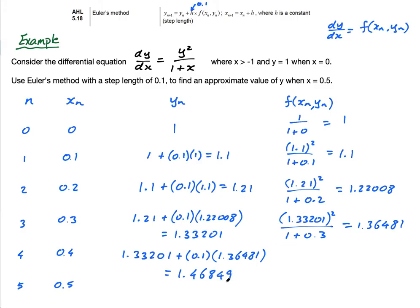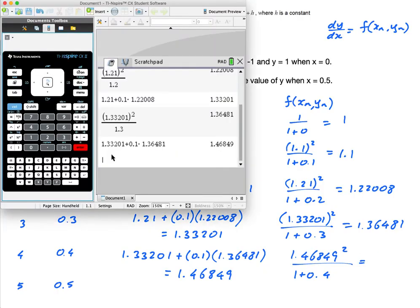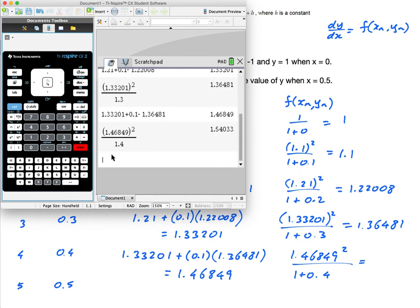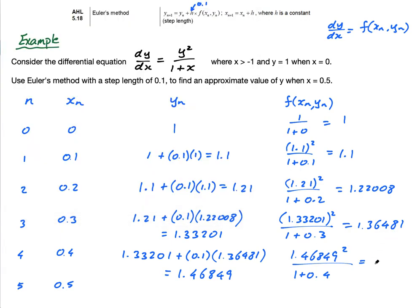Nearly done. Nearly done. Now, I have to put this squared. So, this one equals 1.46849 squared over 1 plus 0.4. And this equals. Two more calculations. 1.46849 squared all over, just do it like that. All over 1.4. Gives me 1.54033. 1.54033.